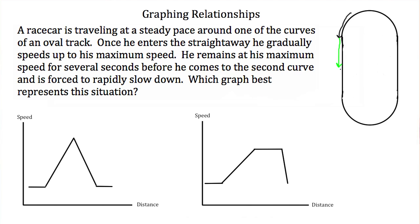Once he hits his maximum speed, he keeps that speed until he hits the second corner. And then when he's at the second corner, he's forced to slow down.